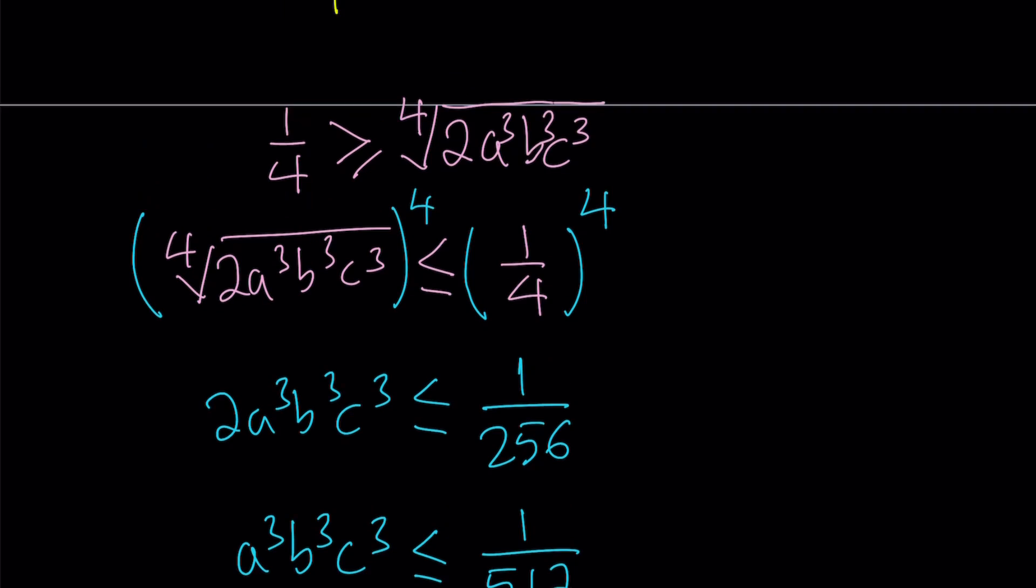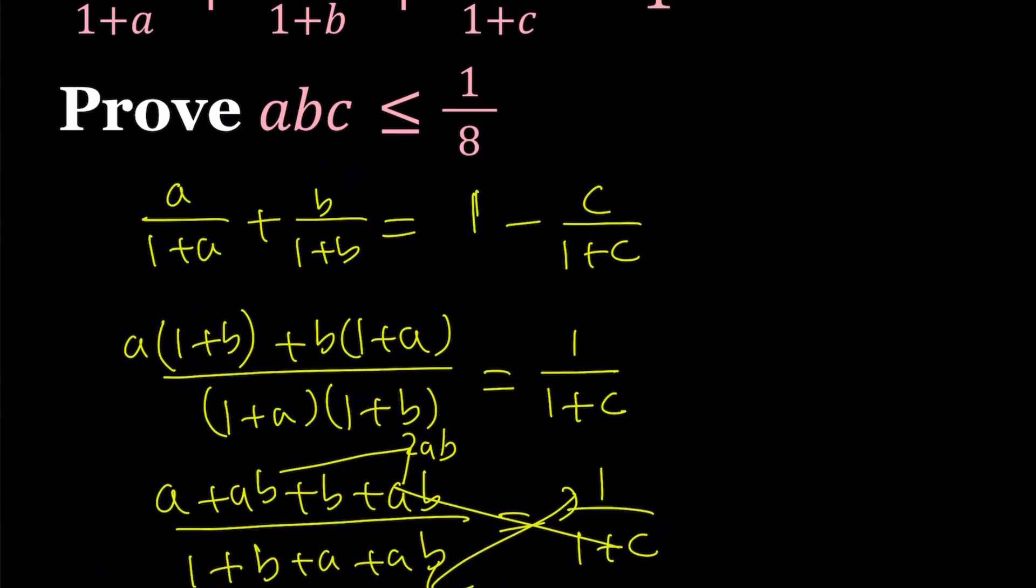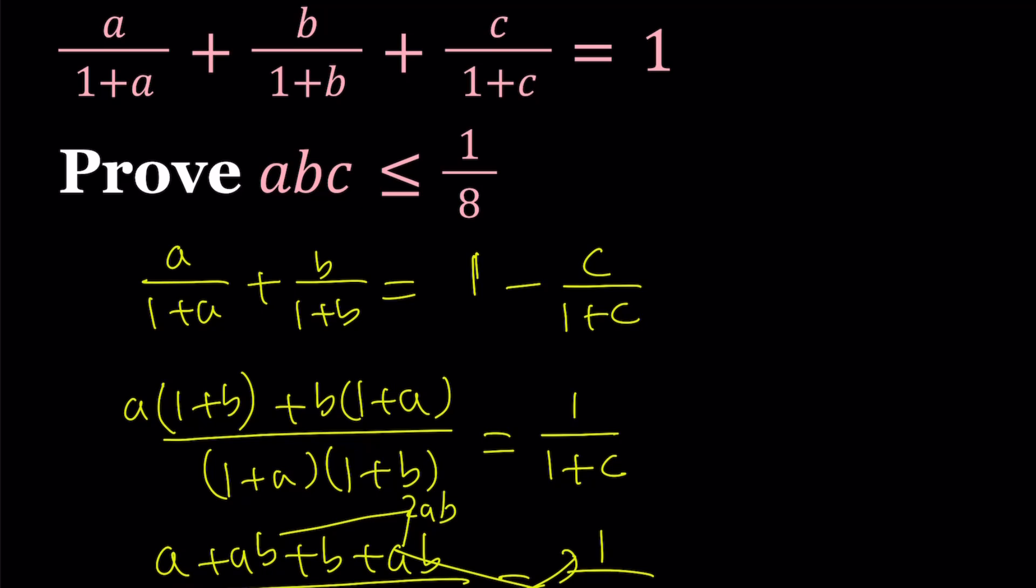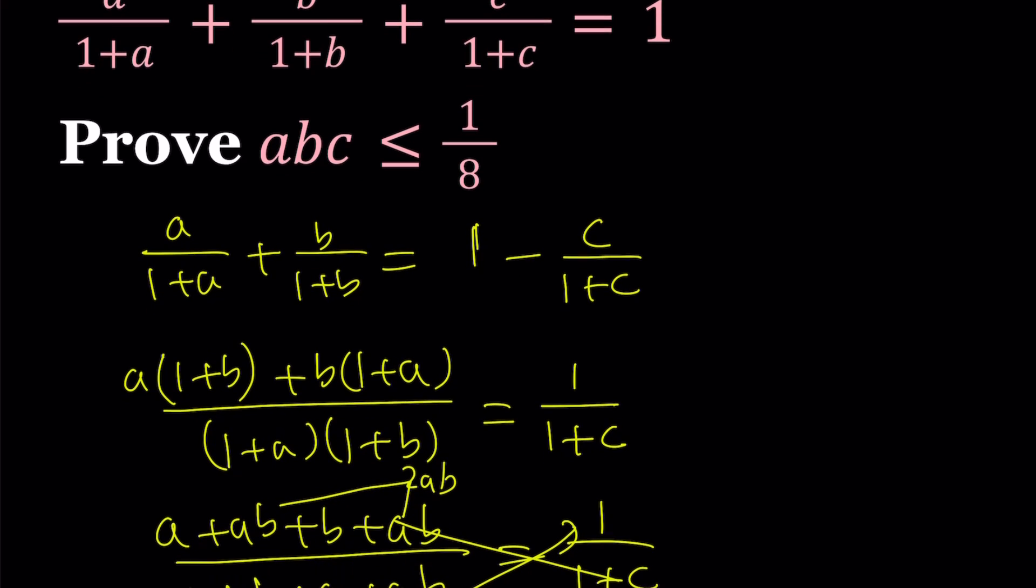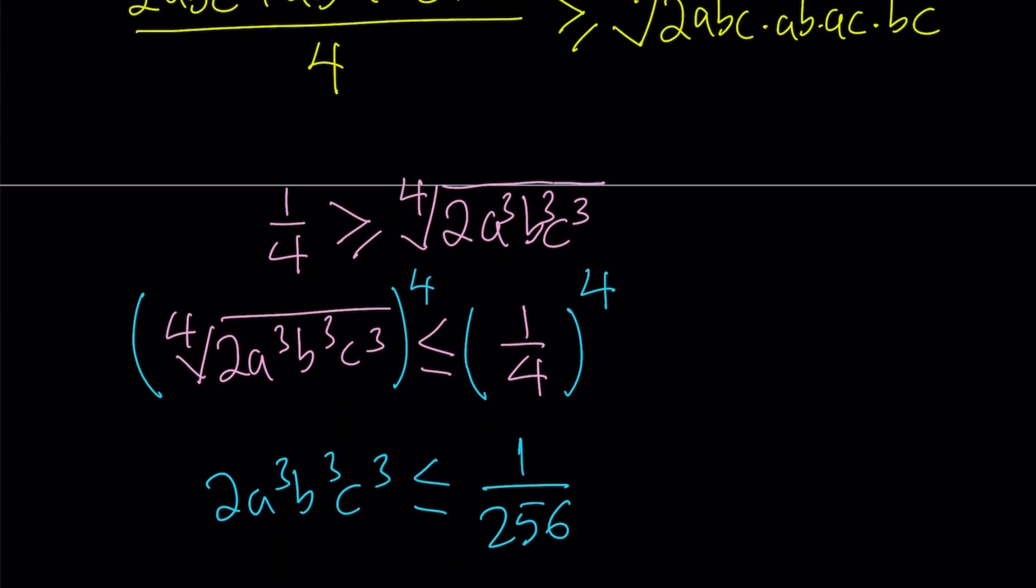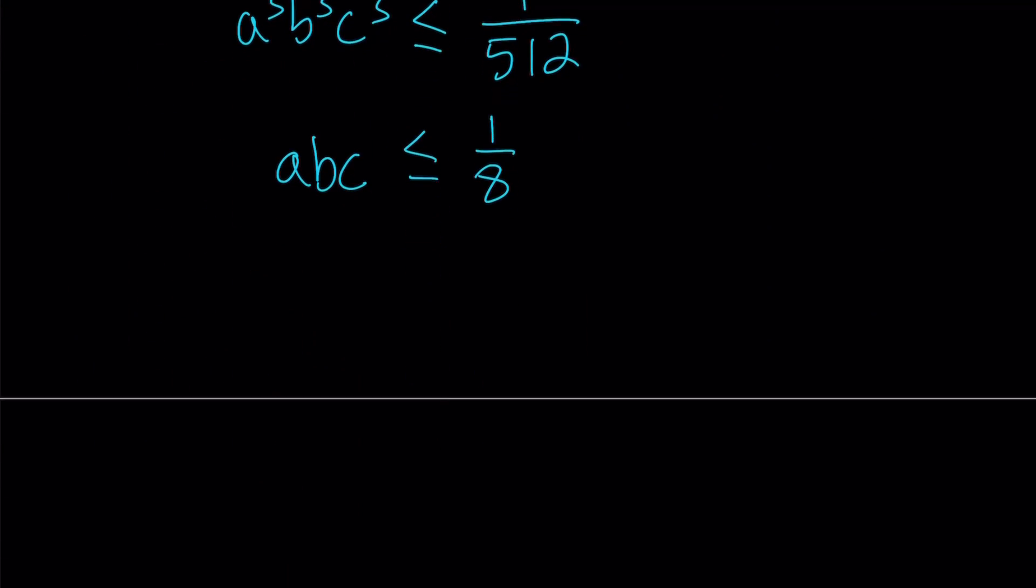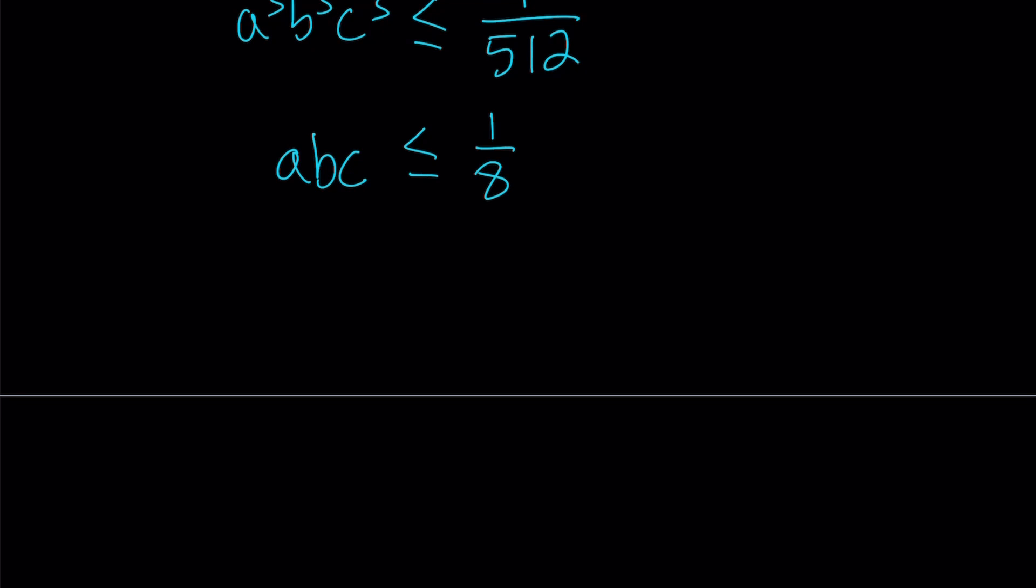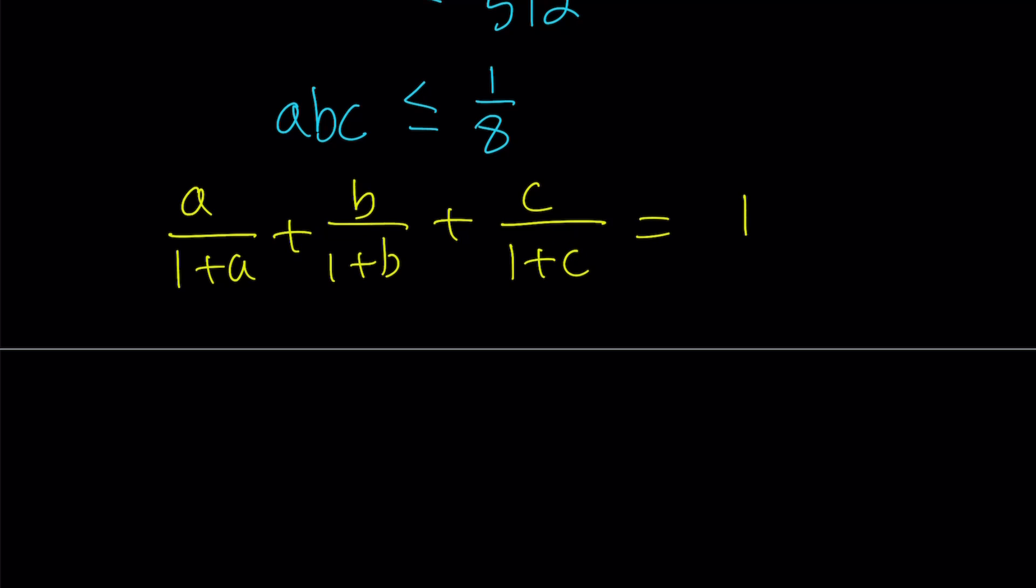So we were given this expression and we were trying to prove that the product is less than or equal to 1/8. Now, let's go ahead and take a look at if this value is attainable. Because a lot of times with these kinds of problems, okay, we find that abc is less than or equal to 1/8, but can abc equal 1/8? That's going to be a good question, right? And a lot of times with expressions like this, the idea is pretty much the same. Of course, we have to have some type of symmetry. So here, if you switch a, b, c around, the expression is not going to change. So we have that kind of symmetry.